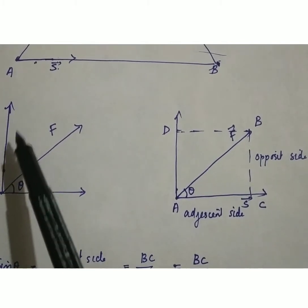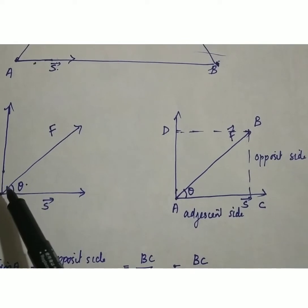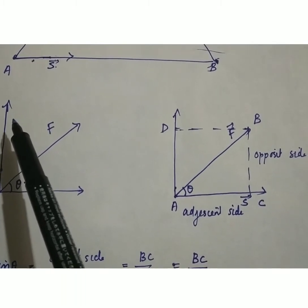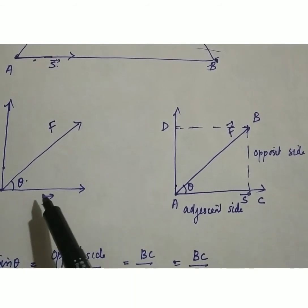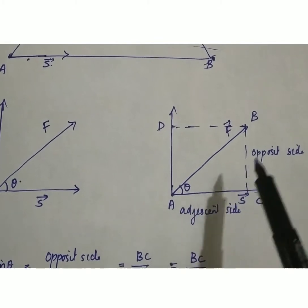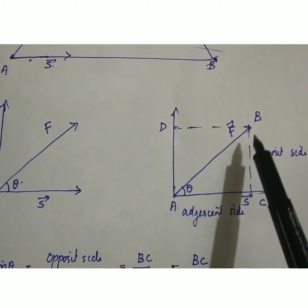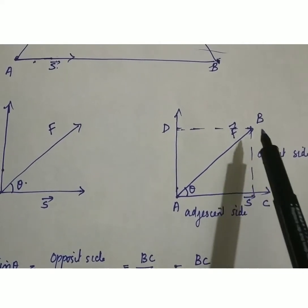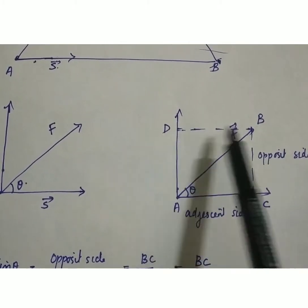One component is in the vertical direction and another one is in the horizontal direction. We have to find how much force is acting in the horizontal direction — how much force is used for the displacement in the horizontal direction. For that, we have to construct a parallel direction. We can mark here point A and then B, then produce BZ downwards perpendicular to the horizontal direction, and BD perpendicular to the vertical direction.